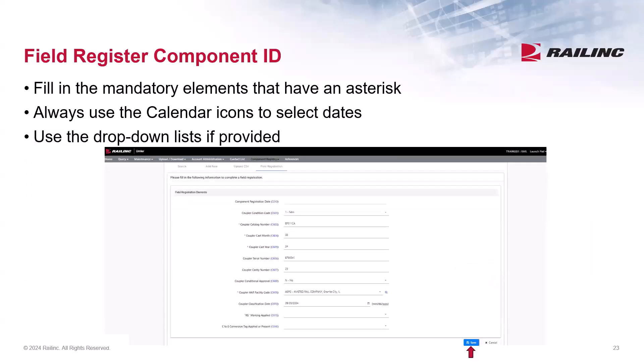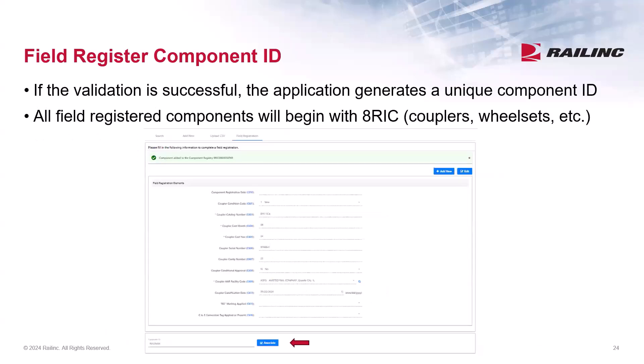Also note for field registrations, each component type may have different mandatory fields for which to search by. Fill in the mandatory fields and any other data that you can read. If you absolutely can't read the label clearly and there's no other way to get the information, the system will allow you to use 9999. In this example, I am field registering a coupler. Once all the required data is entered, select Save. If the validation is successful, the application generates a unique component ID. All field registered components will begin with 8RIC. After completing the field registration, at the bottom of this screen, you can also associate the component to a piece of equipment.